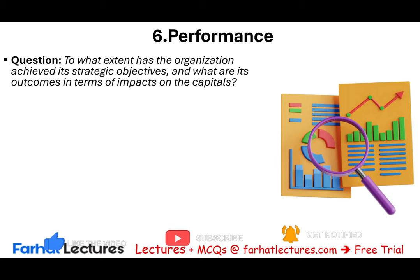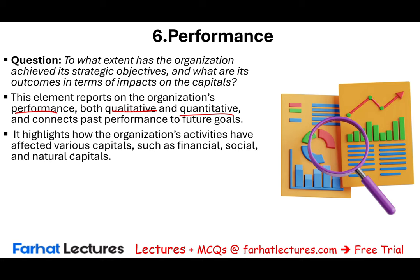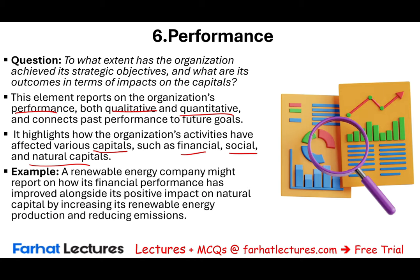The sixth content element is performance: to what extent has the organization achieved its strategic objectives and what are its outcomes in terms of impact on the capitals? This element reports on the organization's performance both quantitatively and qualitatively, connecting past performance to future goals. It highlights activities affecting various capitals such as financial capital, social capital, and natural capital. For example, a renewable energy company might report how its financial performance improved alongside a positive impact on natural capital by increasing renewable energy production and reducing emissions.